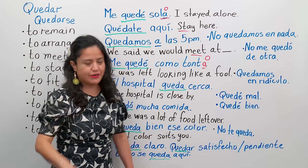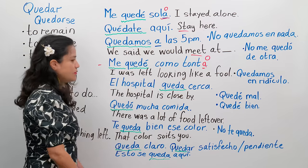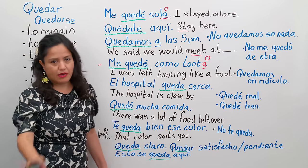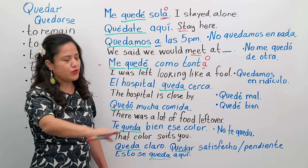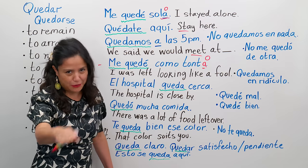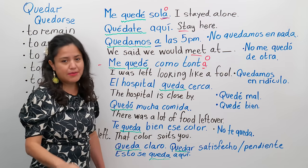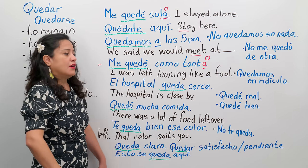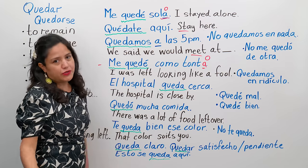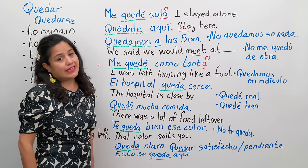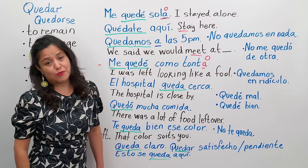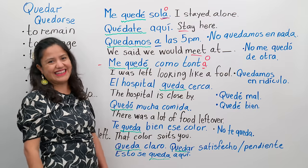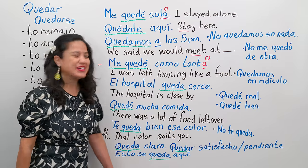Now you'll picture it — now you remember when it happened. I hope it doesn't happen to you. Espero que no te pase. But if it happens to you and you're telling somebody, it's like: me quedé como tonta. O tonto.